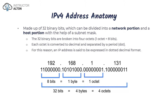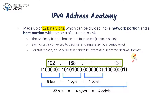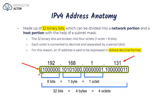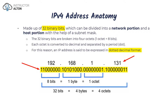Here's a breakdown of an IP version 4 address. Number one: it is made up of 32 binary bits. We look at an IP address in what we call dotted decimal format — for example, 192.168.1.131 — and that's what we use for our brains to understand. But our computer converts it into binary, seeing it as ones and zeros, whereas we see it as dotted decimal format.